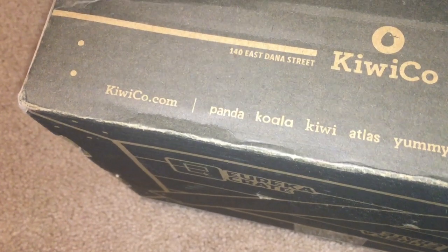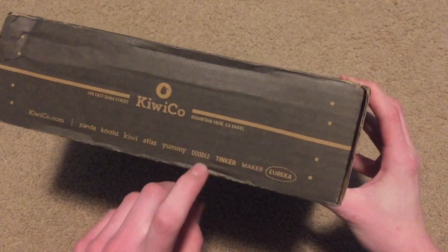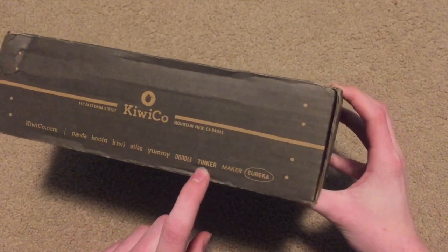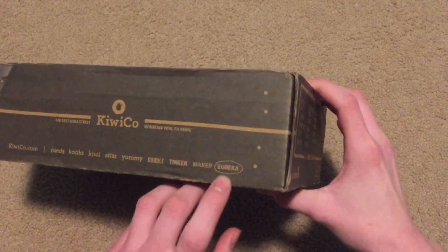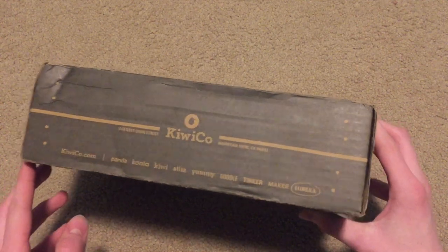There's all sorts of different types of crates you can get. You can get the Panda crate which has toys for toddlers, and then you can get the more advanced ones. I used to do the Tinker crate which is the engineering one, but now I do the Eureka crate which is the much more advanced engineering one. But there's all sorts of like art crates and all sorts of cool stuff.